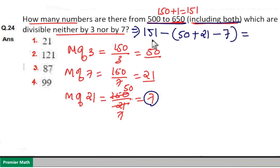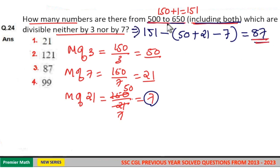This equals 151 minus 50, which is 101. 101 minus 21 equals 80. 80 plus 7 equals 87. So total 87 numbers are between 500 to 650 which are divisible neither by 3 nor by 7.